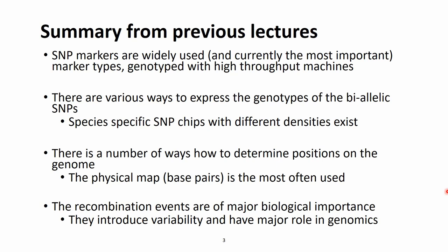Before we move to the new material, here is a quick summary from the previous lectures. We talked about SNP markers that are widely used. There are a number of ways to express these genotypes, but we are always talking about biallelic SNPs, and these biallelic SNPs are being genotyped with species-specific SNP chips. We also talked about how to determine positions on the genome, physical maps, and recombination events that are of major biological importance and introduce variability to populations.